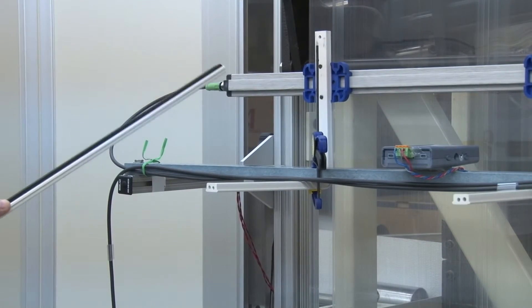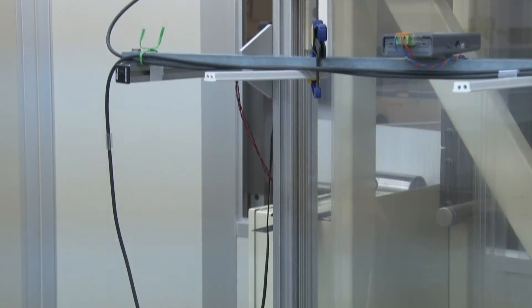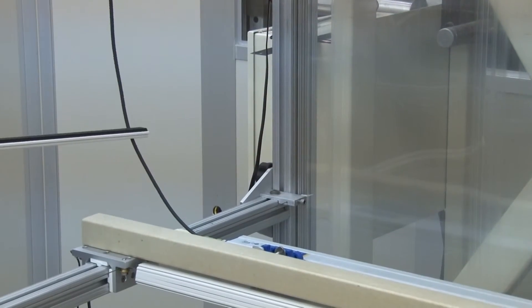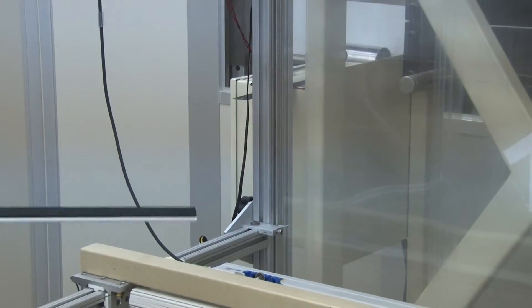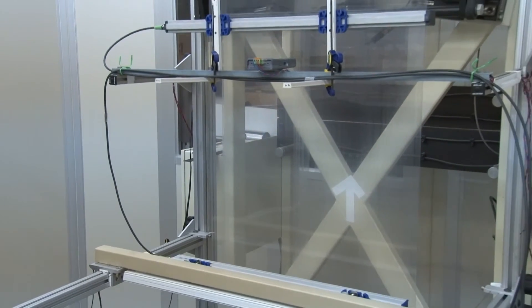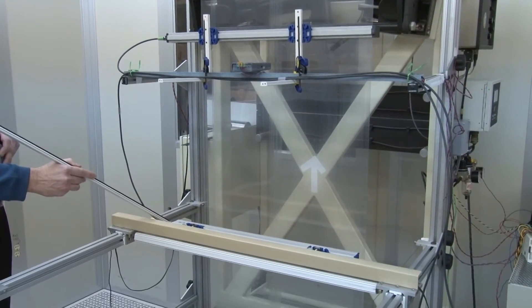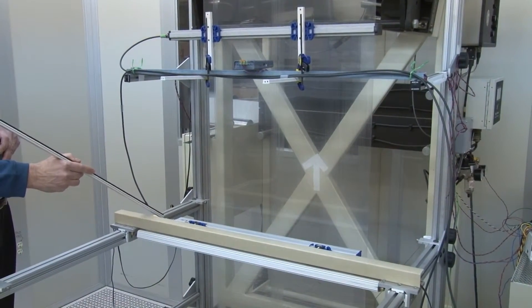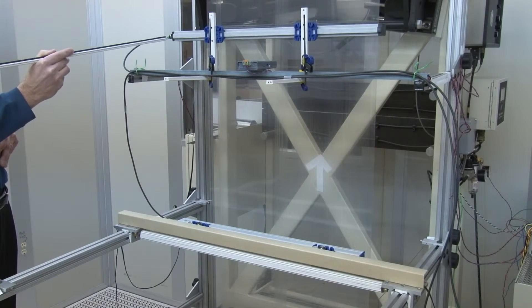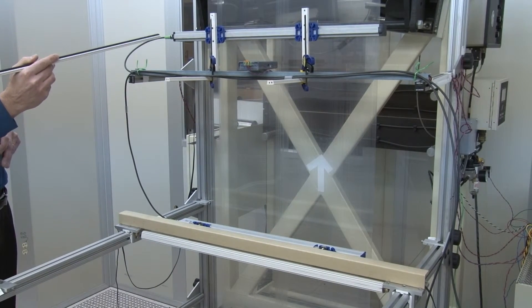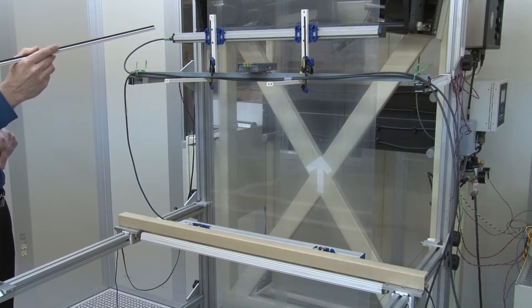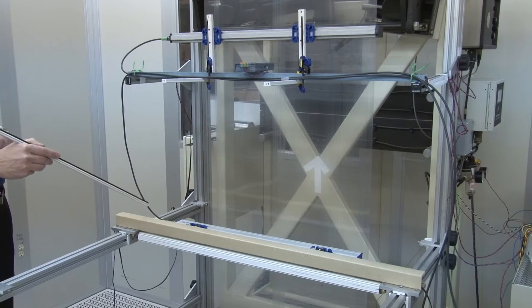The IQ Easy sensor bar and the IQ Easy neutralizing bar both connect back to the IQ Easy manager by M12 standard cable connections. So these are a standard industrial type of cable that's available. They're provided with the sensor bar or the neutralizing bar.